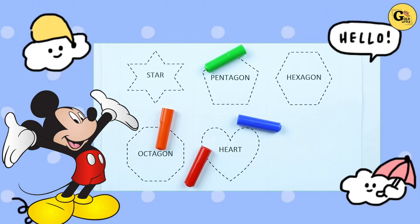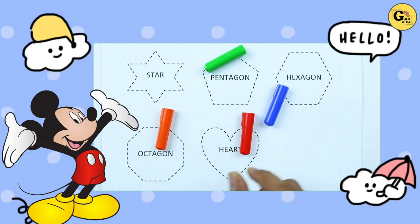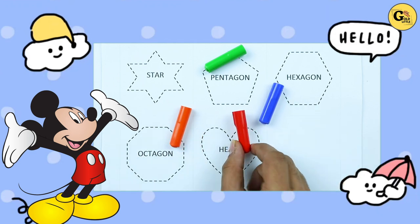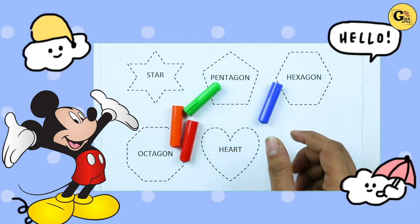Hello friends, today we learn shapes: star, pentagon, hexagon, octagon, and heart with colors. Blue color, orange color, red color, green color.